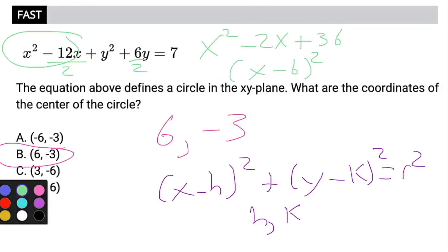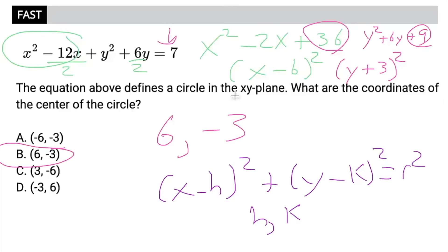Likewise, we would do the same thing to y, and we would end up with y squared plus 6y. 6 divided by 2 is 3, 3 squared is 9, plus 9. And that would factor to (y plus 3) squared. And then as far as the stuff that we add, all of this, the 36 and the 9, gets added to the right side. So technically, we would add that to the right side. That doesn't matter because we're not worried about the radius, which is the radius squared. We're just concerned about the middle.